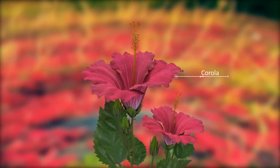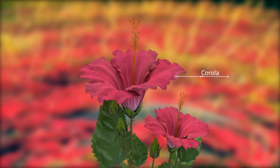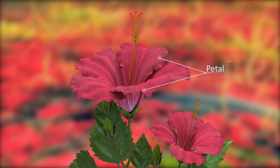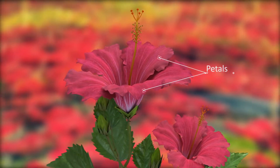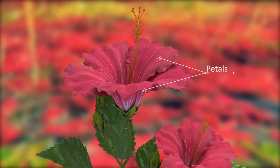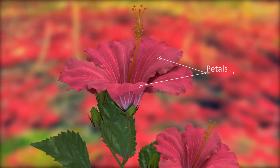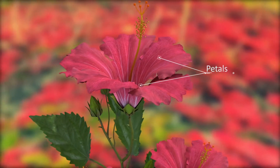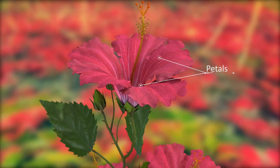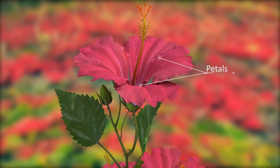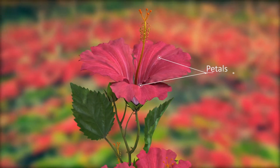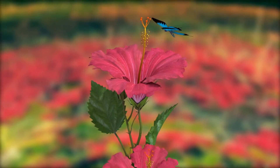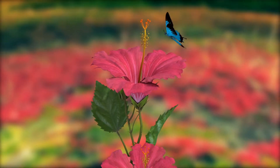Corolla is the second whorl of floral leaves. The members of corolla are called petals. The petals are brightly colored due to the presence of anthocyanin pigments in the vacuoles. These pigments are generally redder in an acidic medium and yellowed in an alkaline medium. Petals are useful to attract the insects for pollination.